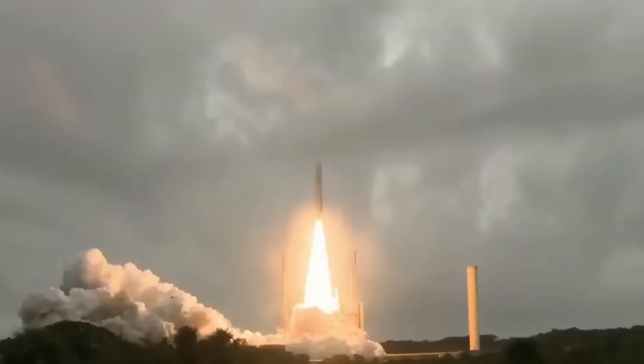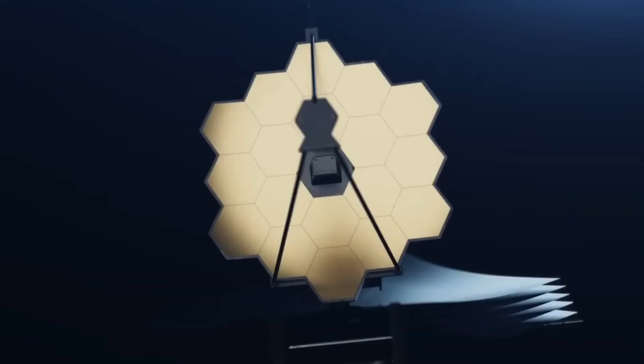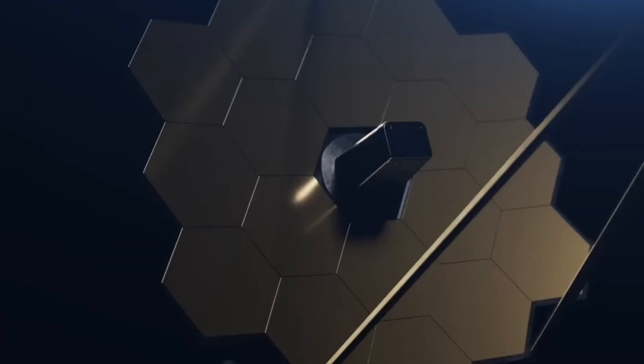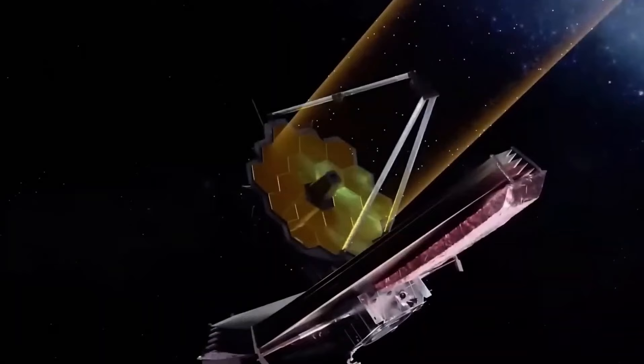Before the JWST could begin its cosmic observations, it had to undergo crucial science and calibration tests. One of the most critical steps was unfurling its massive sunshield, a five-layered membrane designed to protect the telescope's delicate instruments from the Sun's intense heat and light. Given that the telescope will be traveling through space indefinitely, this shield is essential for its protection. The process of unfurling the sunshield required meticulous care and attention to ensure that each layer was correctly tensioned and aligned.